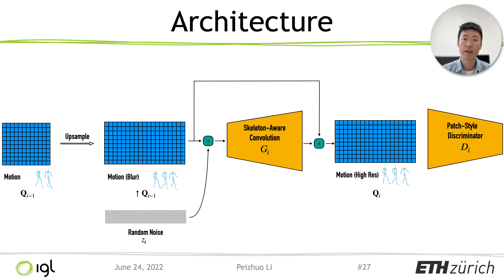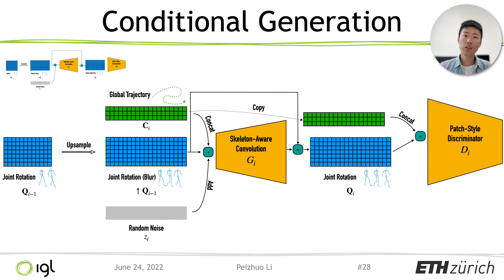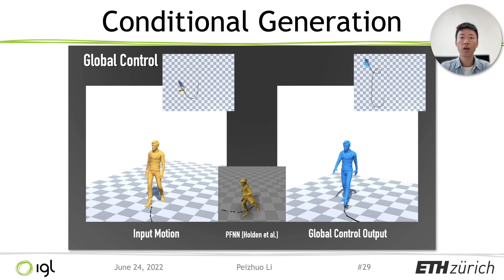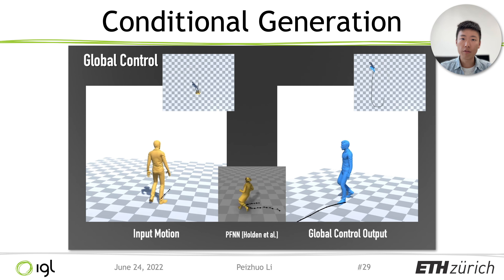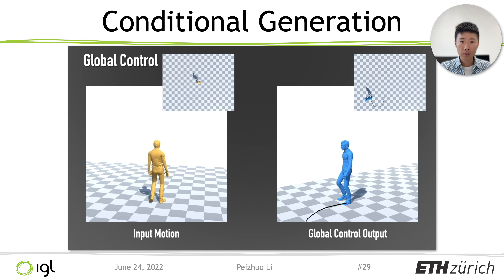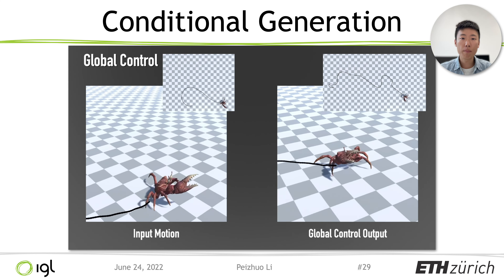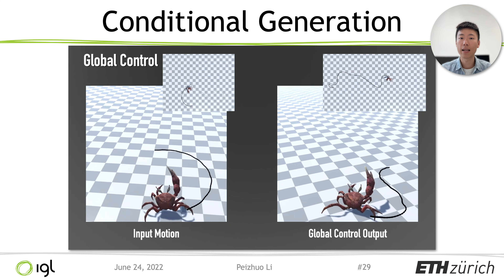Going back to our architecture, with some minor modifications our framework can support conditional generation. When we want to conditionally generate animation given a global trajectory, we exploit the discriminator by concatenating the user-specified global trajectory to the generated rotations, and the network learns to produce animation complying with those constraints. We demonstrate control of global motion of the character, and compare our control model to Holden and colleagues' state-of-the-art technique. Our outputs provide comparable quality while our network uses less than 1% of the data. Our method can also control the trajectory of more complicated skeletons, such as a hexapod.